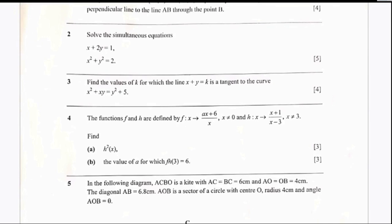Question number four has two parts: part A and part B, and both parts carry three marks each. The functions f and h are defined by f(x) = ax + 6 over x, where x ≠ 0, and h(x) = (x + 1) over (x − 3), where x ≠ 3.